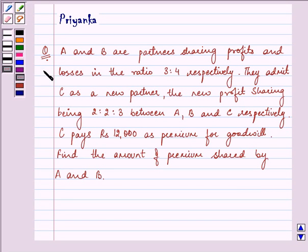Hi and how are you all today? The question says A and B are partners sharing profit and losses in the ratio 3 is to 4 respectively.